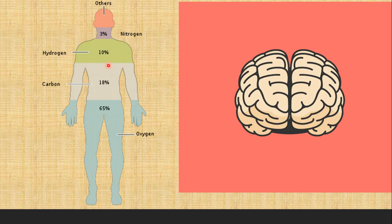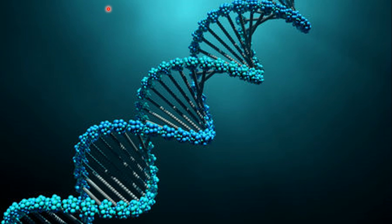Hydrogen takes up 10%, nitrogen takes up 3%, calcium takes up 1.5%, and phosphorus takes up 1%. These are all the elements above one percent — just six of them. There are 10 more elements that make up the remaining smaller fraction.